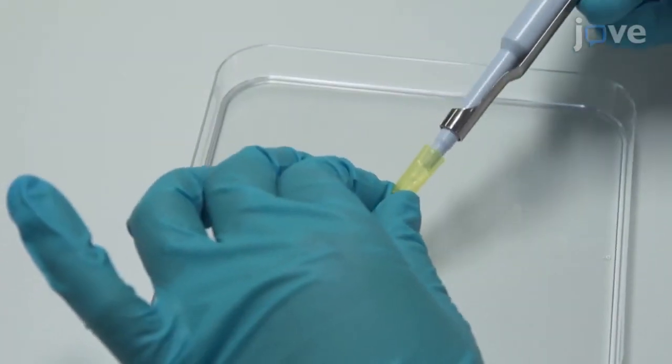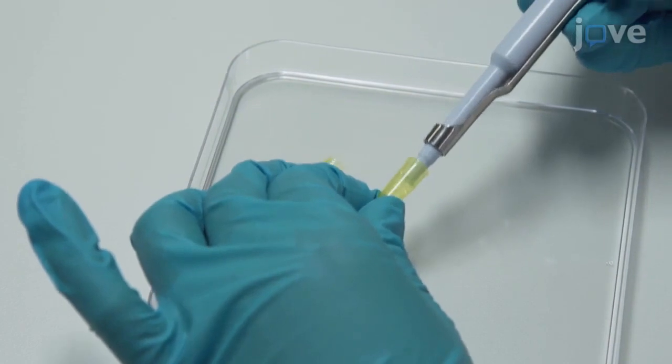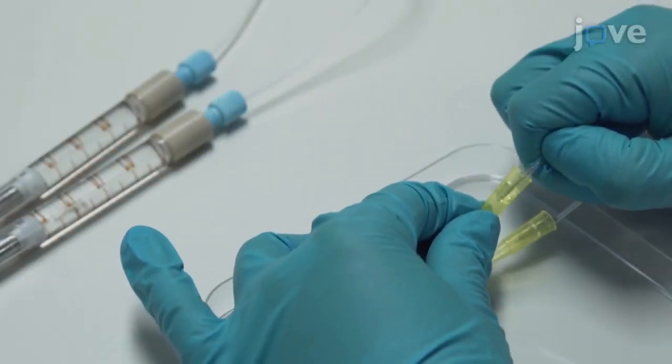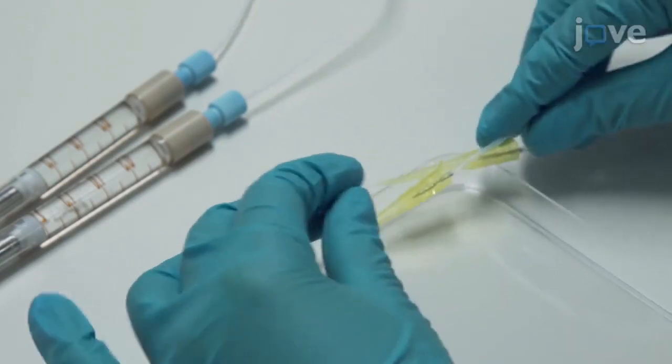Insert the plug tightly into the top end of a 200 µL pipet tip and insert the tubing attached to the bio-compatible mineral oil syringe into the plug.